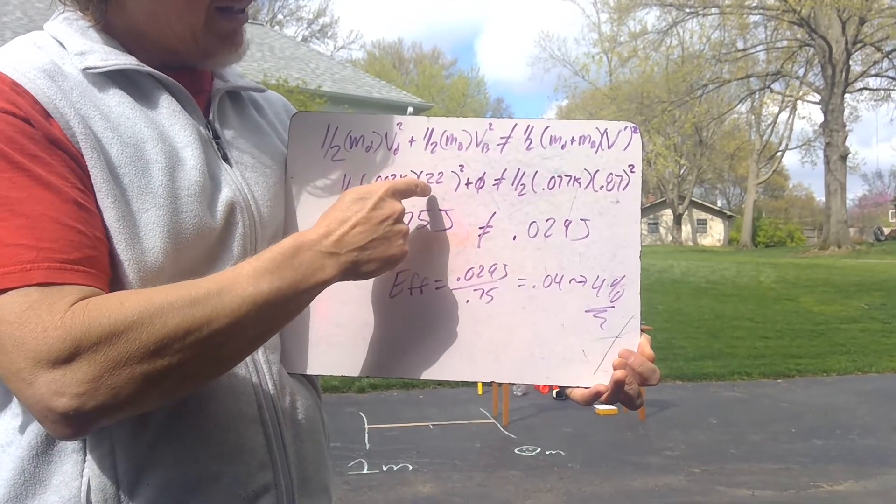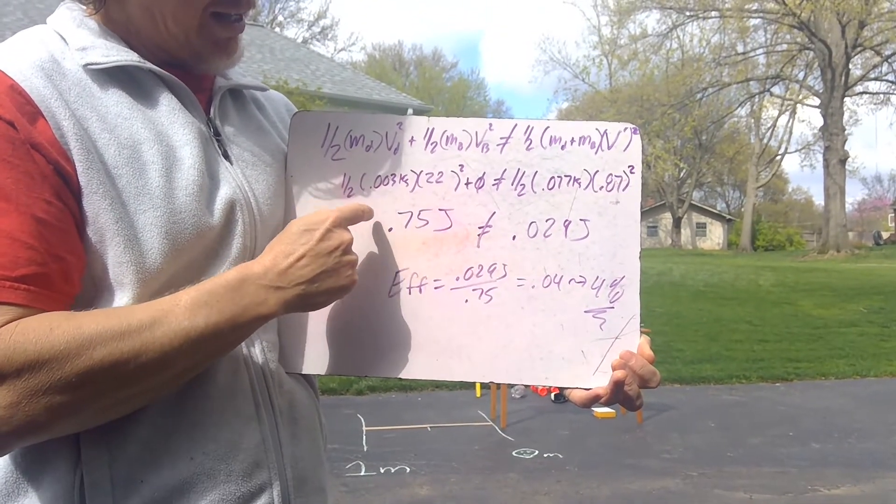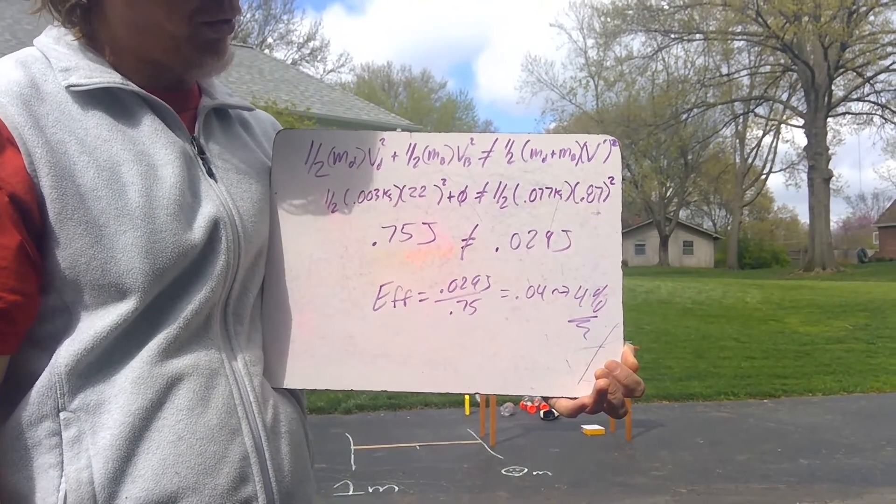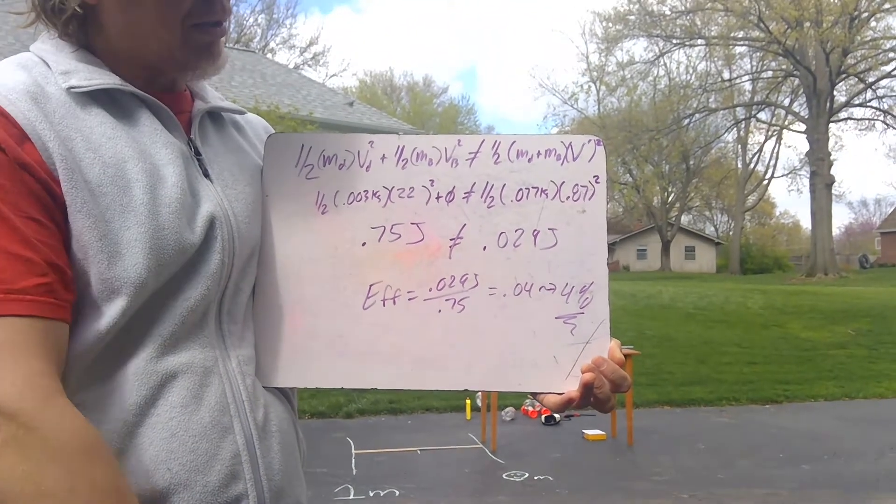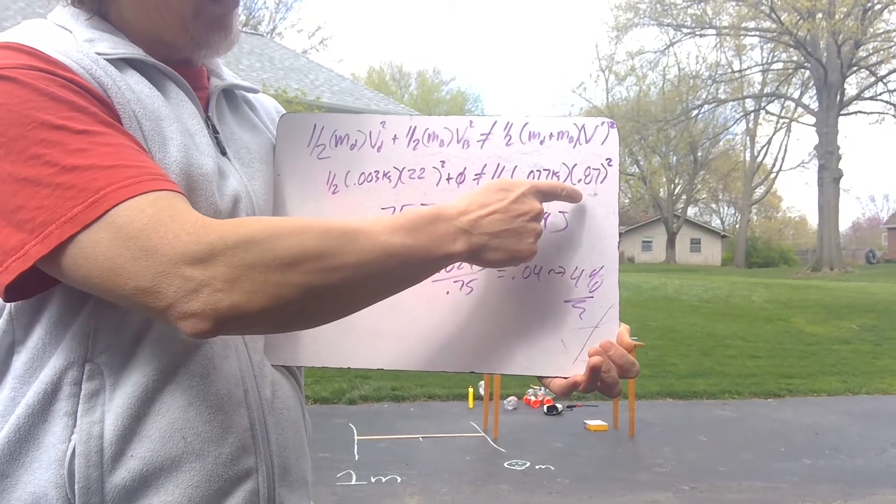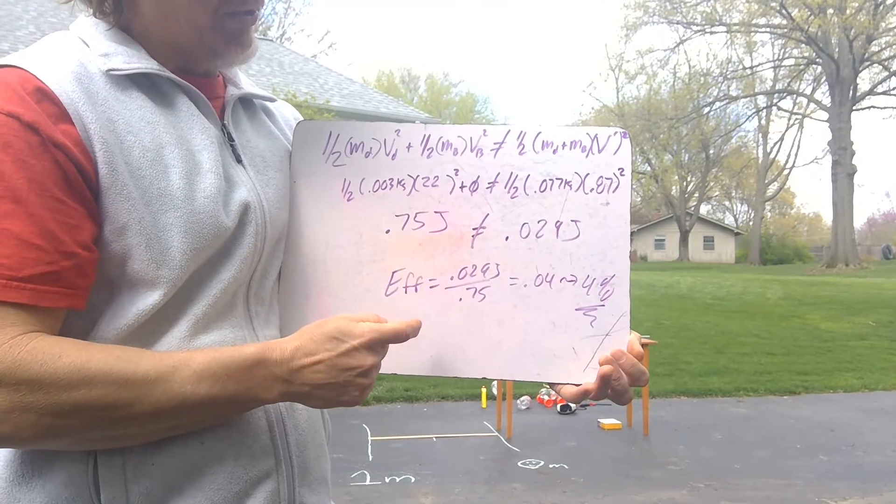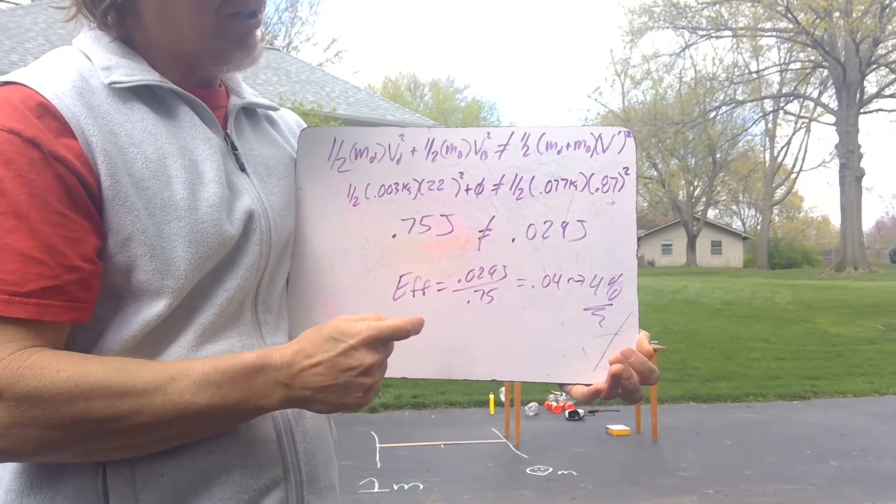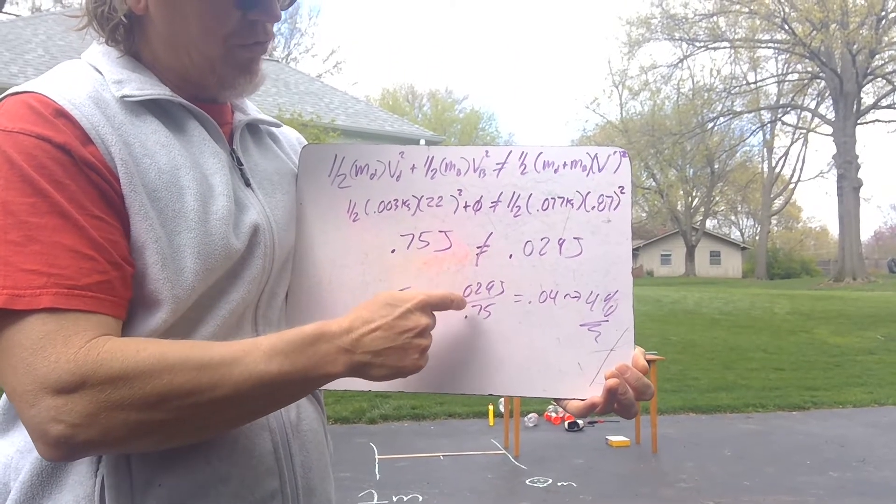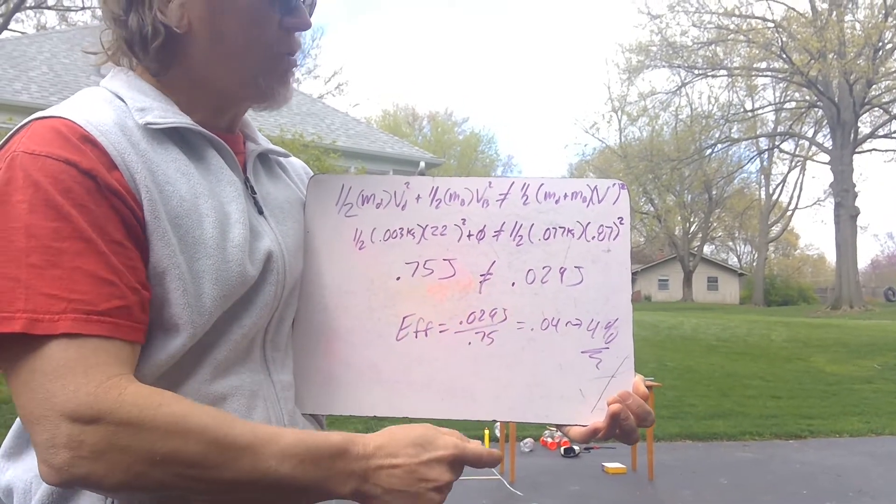The dart was the only thing that had kinetic energy to start with. So the 22 squared times the mass times a half, it's only 0.75 joules. Not a lot of energy at 22 meters per second, about 45 miles per hour. But after it hit the block, way less kinetic energy. Because it's not moving very fast. And not very fast squared is really not a very big number. So to give you an idea of the efficiency of keeping the kinetic energy, the ending energy over the beginning energy, 0.029 divided by 0.75 joules, is only 0.04 which is 4%. That means we lost 96% of our energy in this experiment today. We only kept 4% of the energy in this inelastic collision.